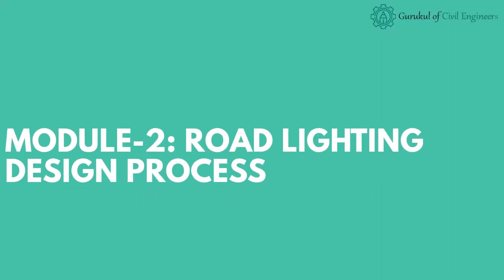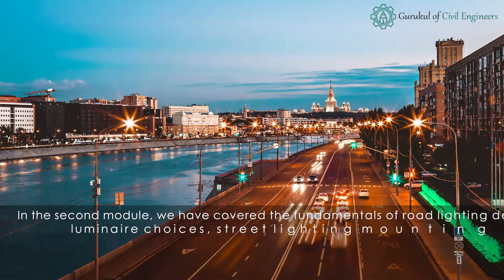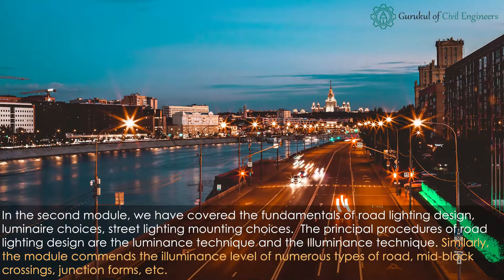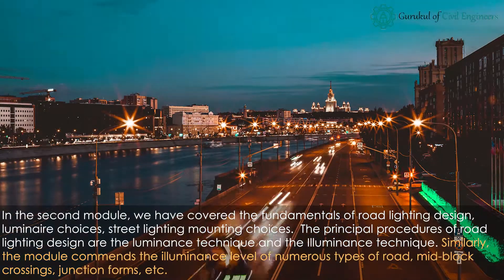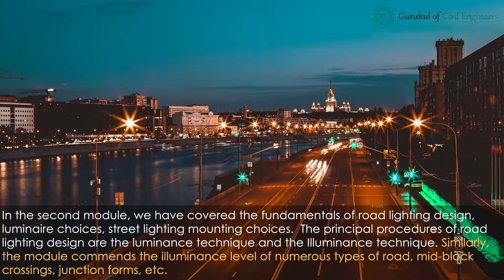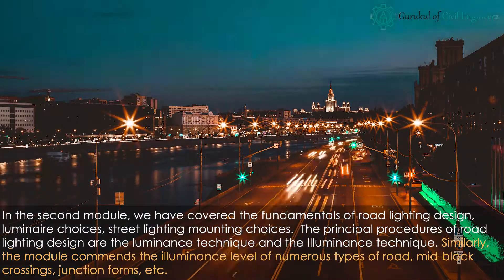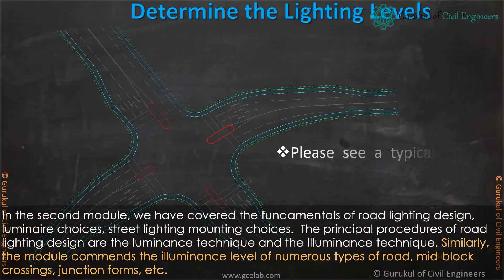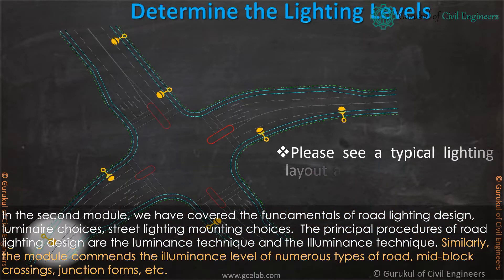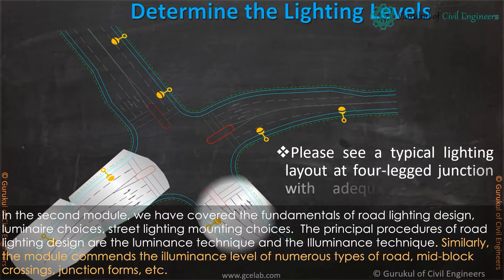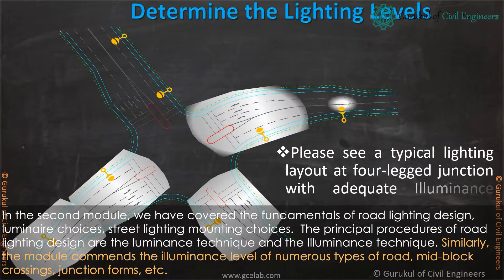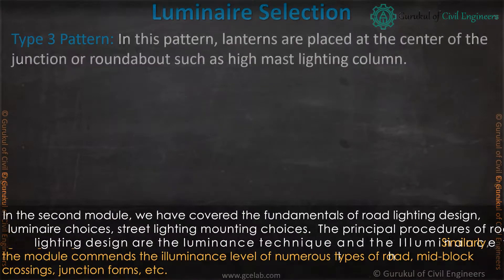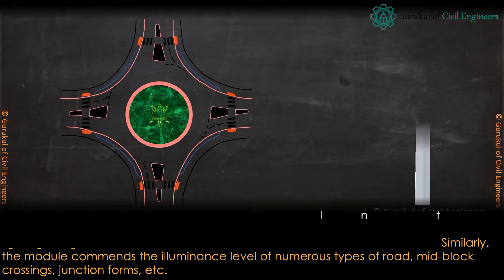Module 2: Road Lighting Design Process. In the second module, we have covered the fundamentals of road lighting design, luminaire choices, and street lighting mounting choices. The principal procedures of road lighting design are the luminance technique and the illuminance technique. Similarly, the module recommends the illuminance level of numerous types of road, mid-block crossings, junction forms, etc.